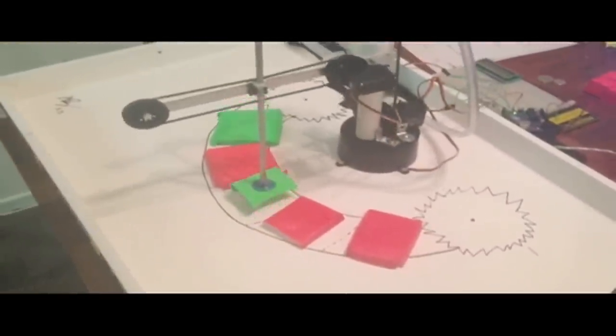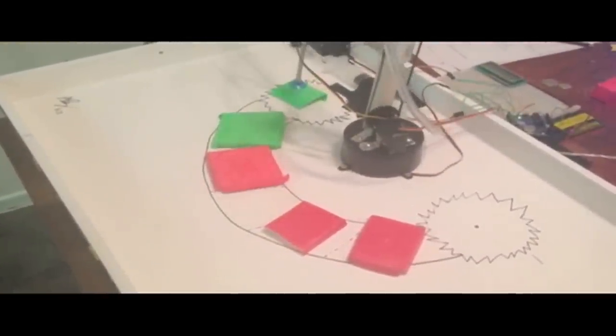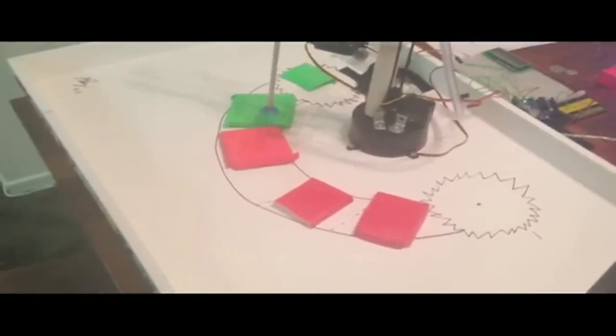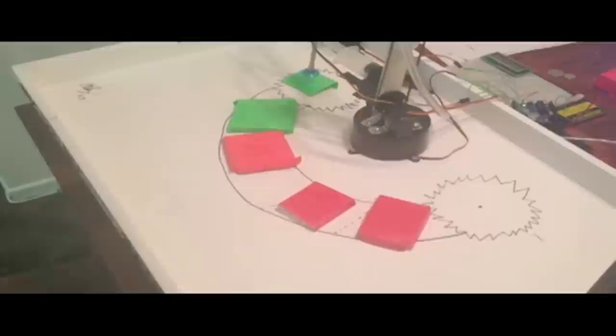Okay, so basically we created a vision-based robotic arm that can sort objects depending on its color. As you can see here, we have two red and green boxes and it's moving the green boxes to the right.